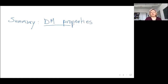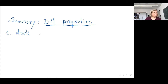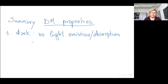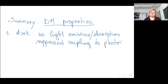So these are the dark matter properties — a kind of wishlist. First, dark matter should be dark. What does 'dark' mean? It means very weak or no interaction with photons — so no light emission or absorption. The coupling doesn't have to be exactly zero, but it has to be very small — a suppressed coupling to photons.